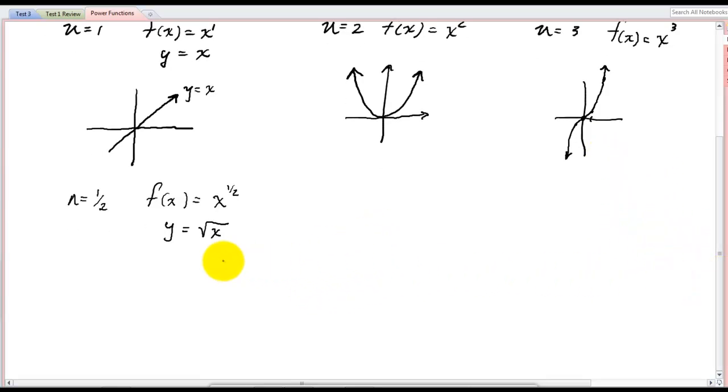And we know how that looks. Of course its domain is restricted. And it goes through 0,0, 1,1, and 4,2, and looks like that.